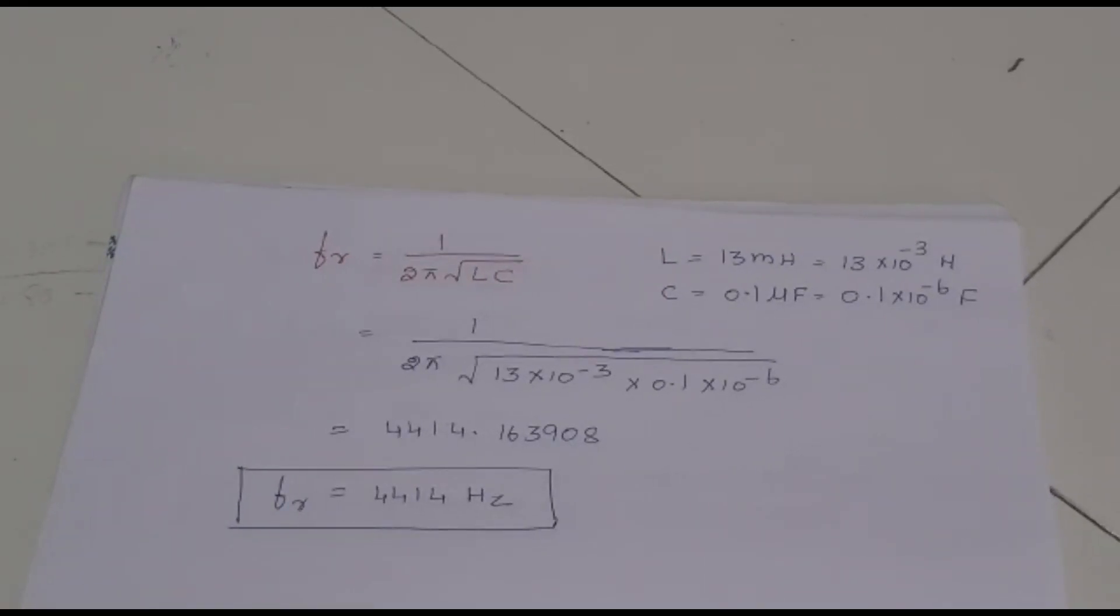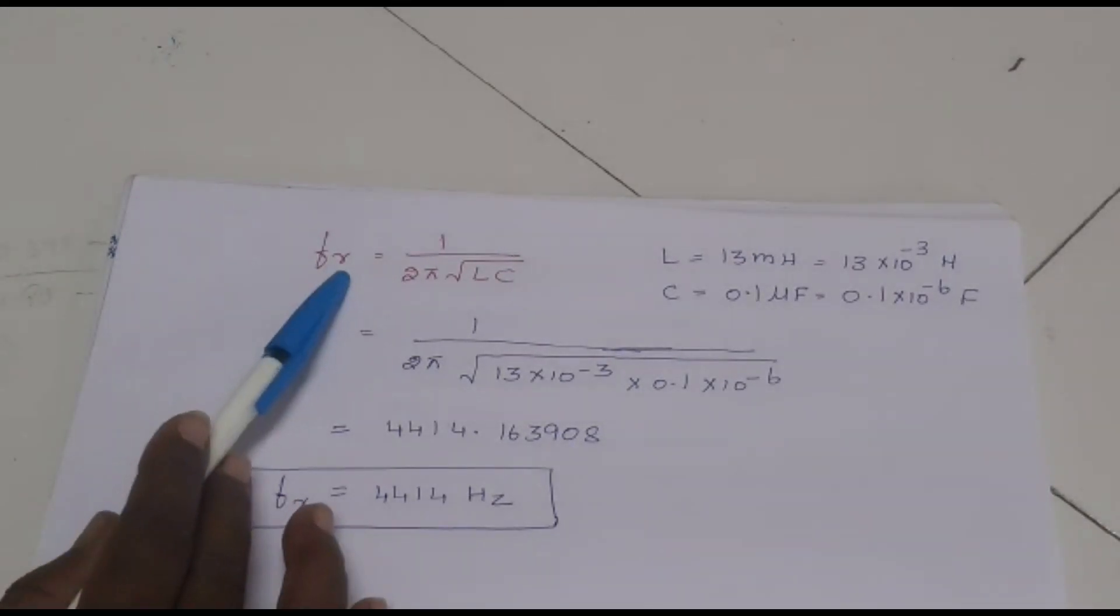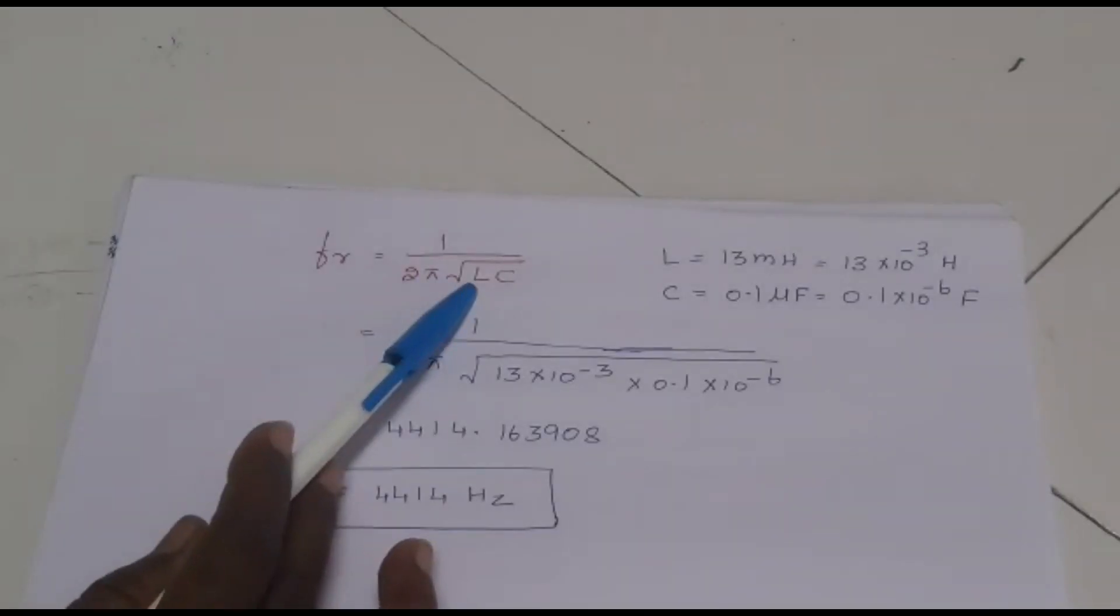In this video, I would like to show how to do the calculation for LCR series circuit. This is the formula: FR is equal to 1 by 2 pi root of LC.